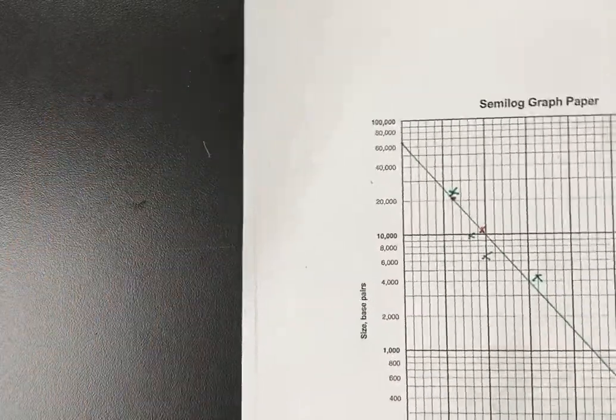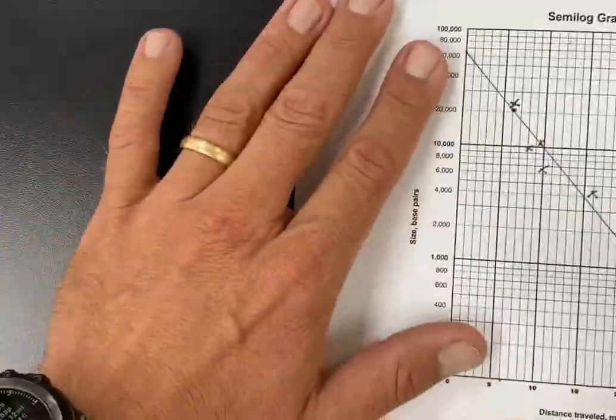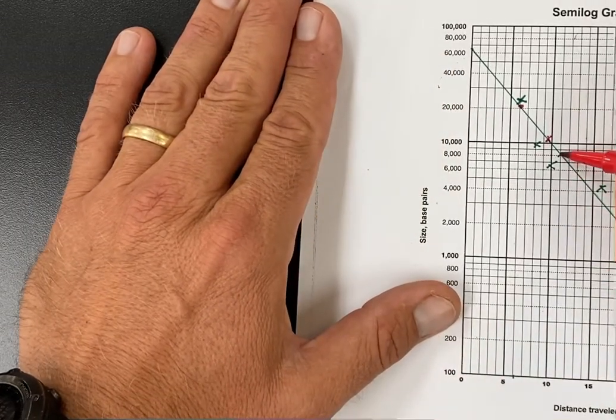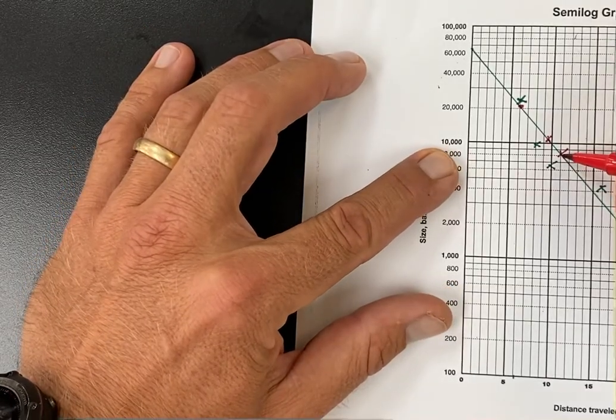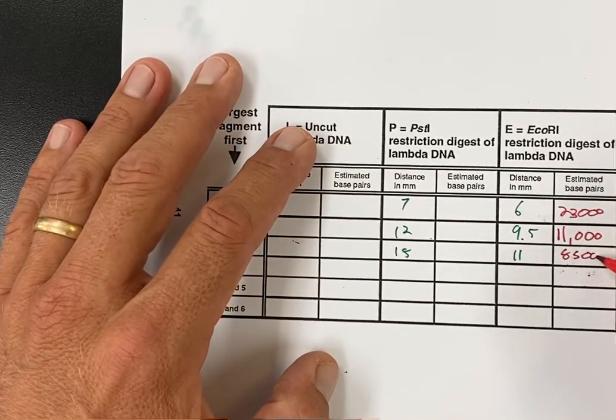And then my last one, I already forgot what that said. That said eleven millimeters, so I'm going to go eleven and that hits right here, which looks like it's about eight thousand, maybe eight thousand five hundred base pairs. And so that gives me an indication of about how big those bands are.